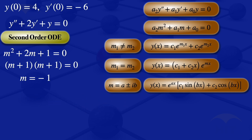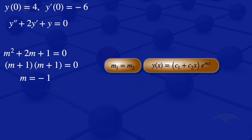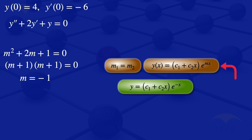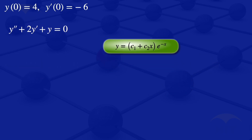Since m equals minus 1, our solution is of the form for real repeated roots: y equals (c1 plus c2·x)·e^(mx). Substituting m equals minus 1, our general solution is y equals (c1 plus c2·x)·e^(-x).